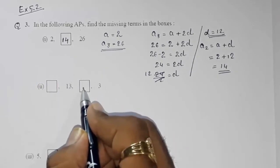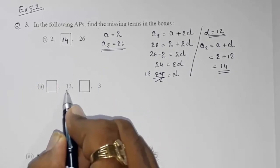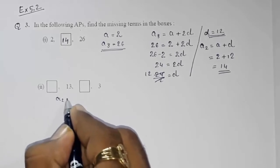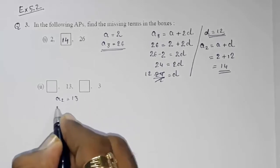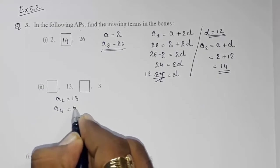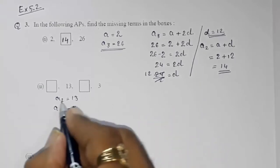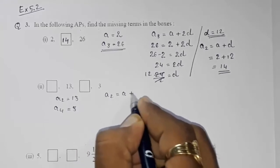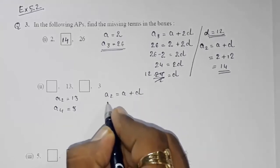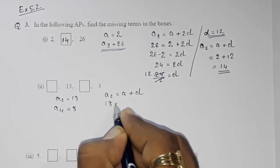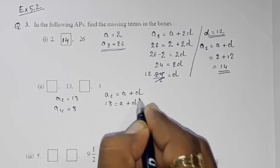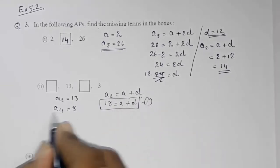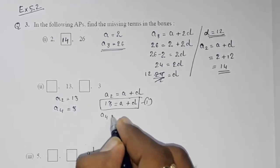In part two, they have not given the first term or third term — only the second and fourth terms. We have a2 = 13 and a4 = 3. From a2, we get: a + d = 13. Take this as equation number 1.